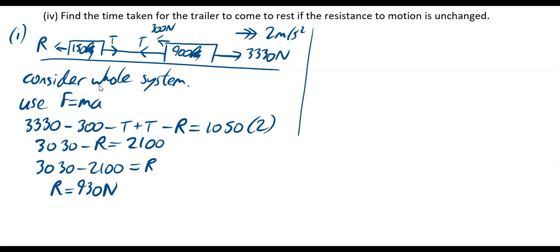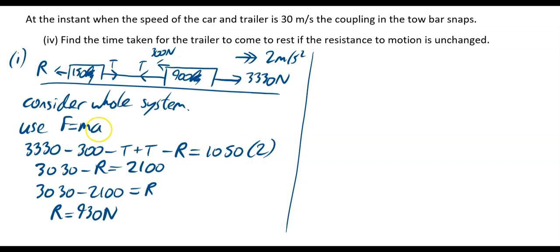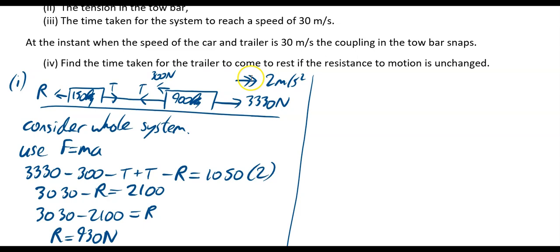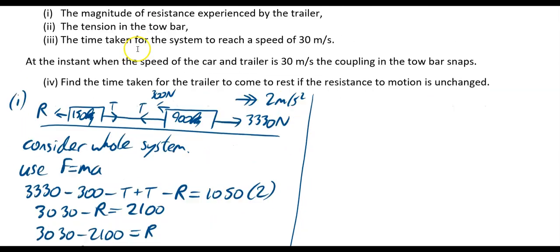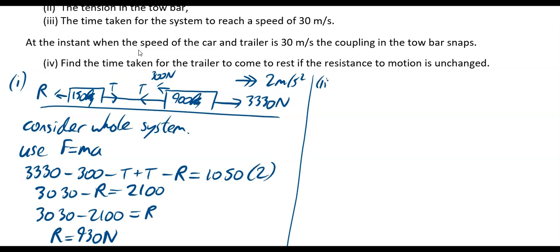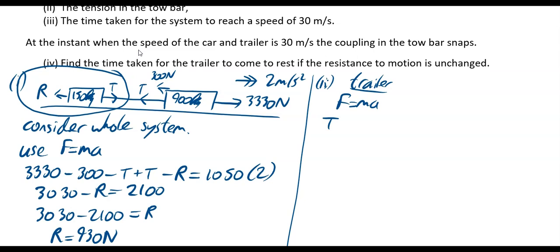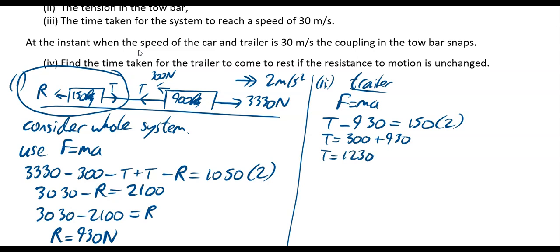For part two, find the tension in the tow bar. Consider just the trailer using F = ma: T − R = 150 × 2. Since R = 930, we get T = (150 × 2) + 930 = 300 + 930 = 1230 newtons.